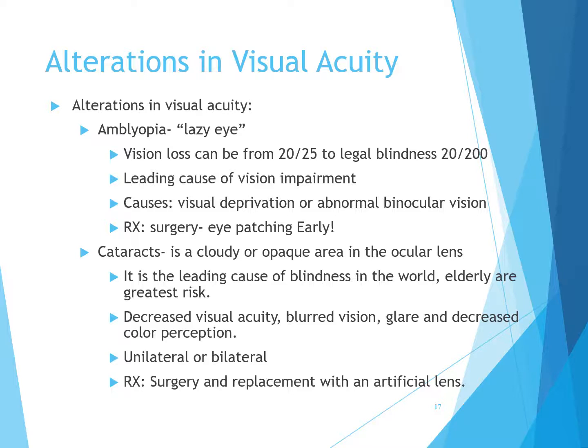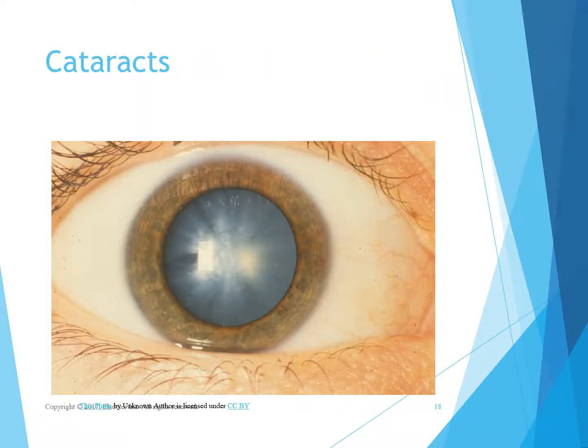Cataracts can be unilateral or bilateral and present with decreased red reflex. Surgery is usually performed, replacing the lens with an artificial one. They do one eye at a time — typically one eye, then the other about two weeks later.